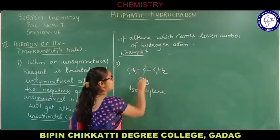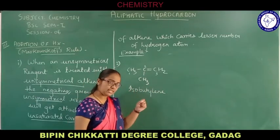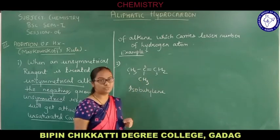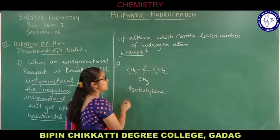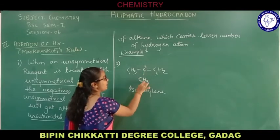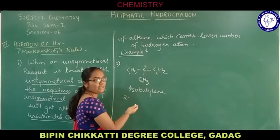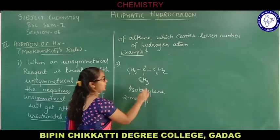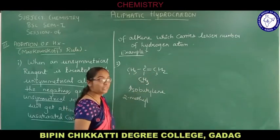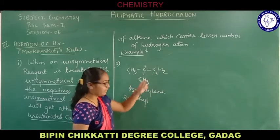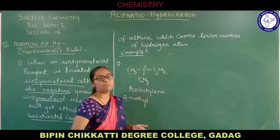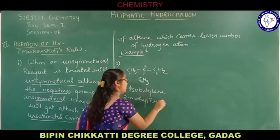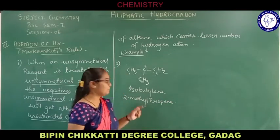So four carbon atoms total when counting the methyl group. The common name is isobutylene, and the IUPAC name is 2-methylpropene — because at carbon number two the methyl group is attached. The longest chain has three carbons with a double bond (propene), and the methyl branch gives us 2-methylpropene.